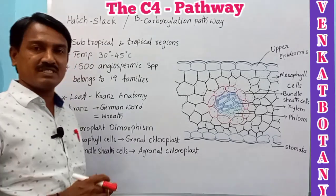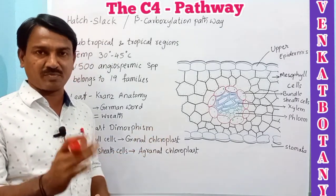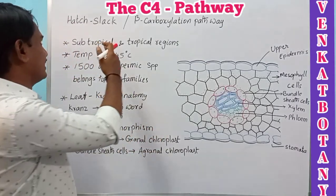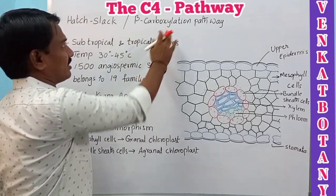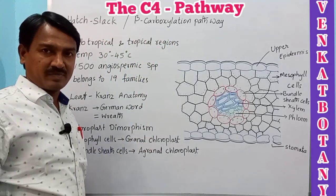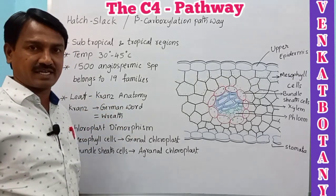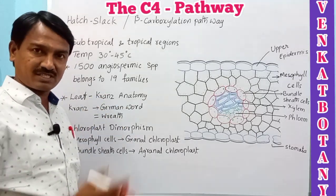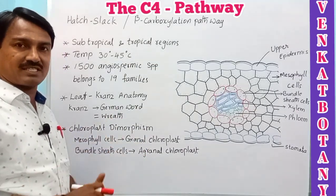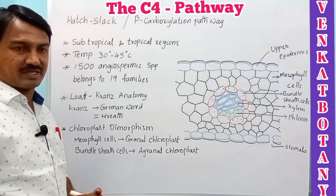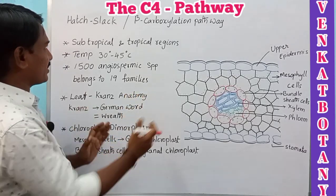Having completed the C3 cycle in our previous video, let us now discuss C4 plants. The C4 pathway is also called the Hatch-Slack pathway or the beta-carboxylation pathway, because it was elaborated by Hatch and Slack.